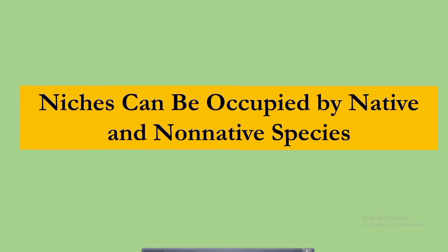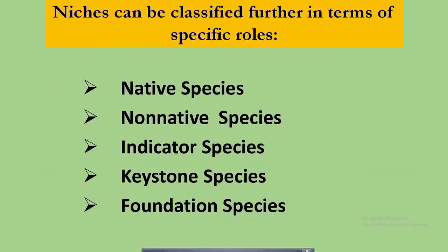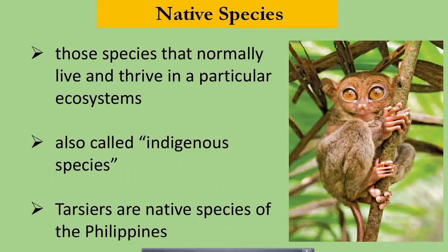Niches can be occupied by native and non-native species. Niches can be classified further in terms of specific roles. These are the native, non-native, indicator, keystone, and foundation species. Any given species may function as more than one of these five roles in a particular ecosystem. Native species are those that normally live and thrive in a particular ecosystem — they are also called indigenous species. Star fish are a good example of native species here in the Philippines.